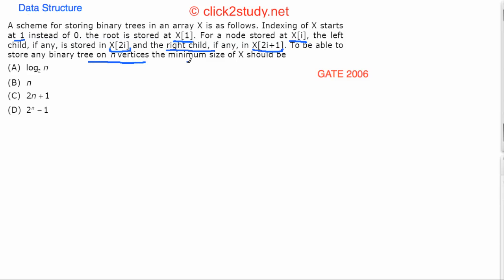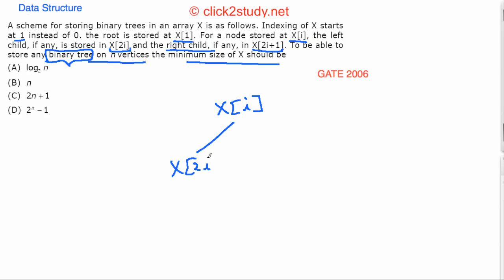To be able to store any binary tree on n vertices, we need to find the minimum size of the array x. The important thing here is that if x[i] is the parent, the left child is stored at x[2i] and the right child at x[2i+1]. This will decide which binary tree takes the most space.